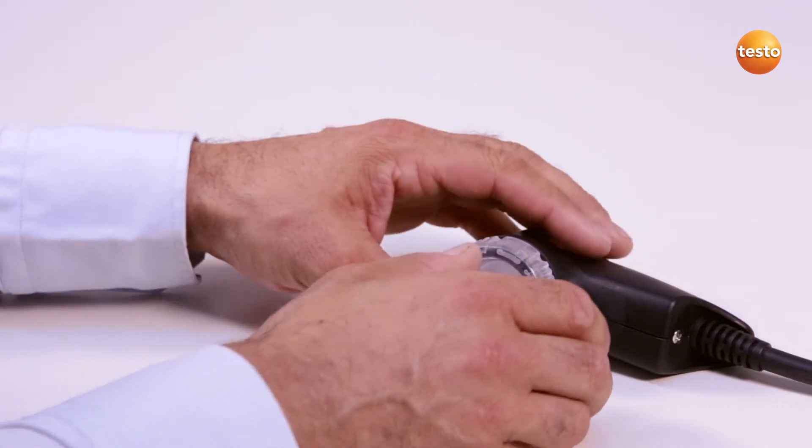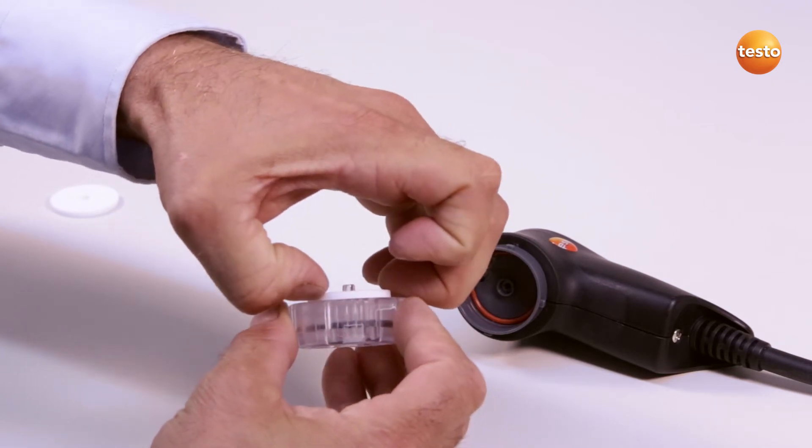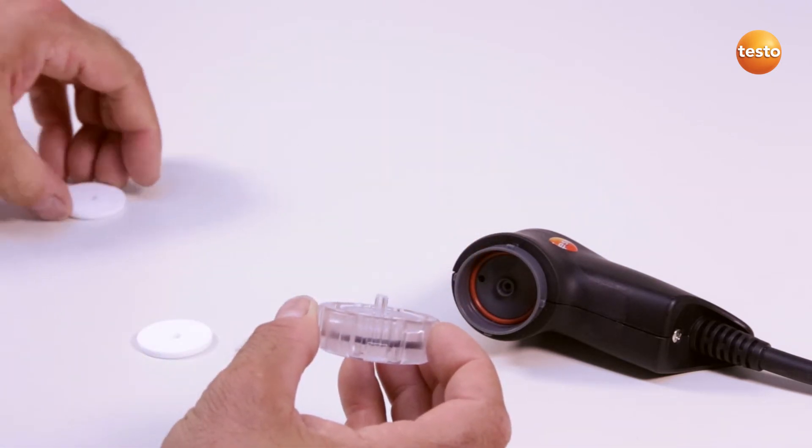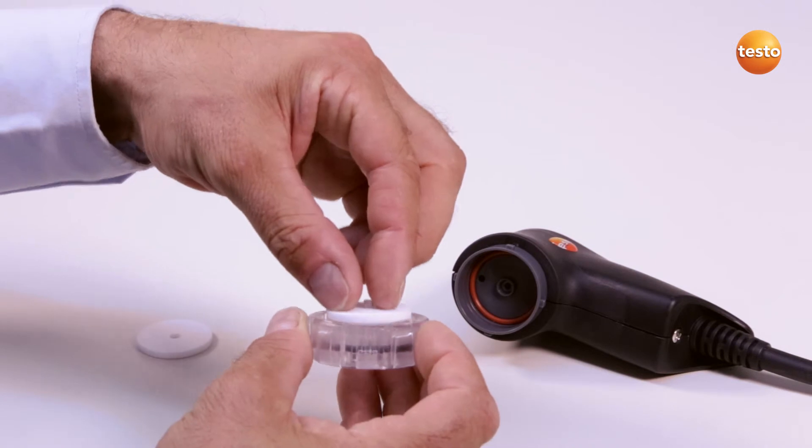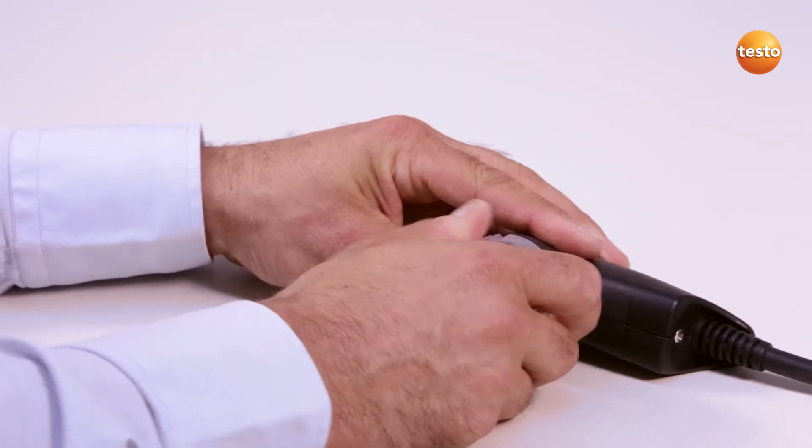In order to exchange the particle filter, I open the filter chamber by turning slightly anti-clockwise. I remove the filter disc and replace it with a new one. I finally replace the filter chamber and close it.